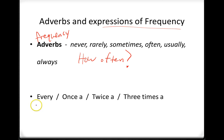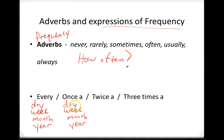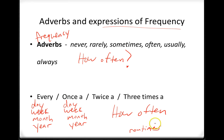Expressions of frequency are these down here. For example: every day, every week, every month, every year; once a day, once a week, once a month, once a year; twice a day, twice a week, twice a month, twice a year; three times a day, three times a week, three times a month, three times a year — and it could be four times a day, five times a week, six times a month, seven times a year. You can get creative. But all of these talk about how often, which is perfect if you're talking about routines. So this is a frequency adverb and expressions of frequency.